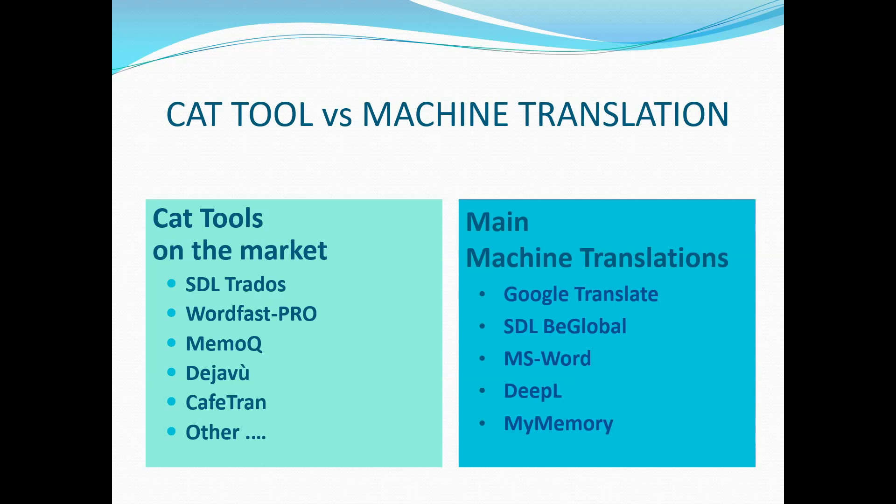Even so, a CAT tool can also connect to a machine translation, just to have this service of automatic translation connected to the translation workflow of the human translator.